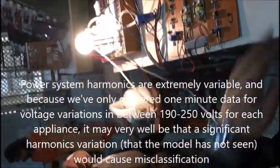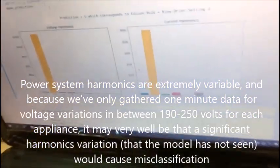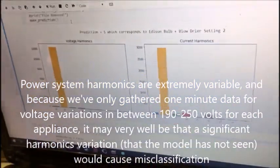We have the bulb and the blow dryer connected right now. Let's see what the neural network predicts. It says Edison bulb plus blow dryer setting two. Which is correct.